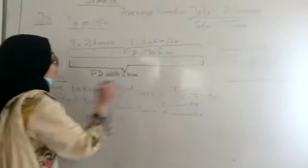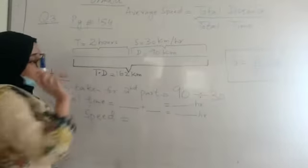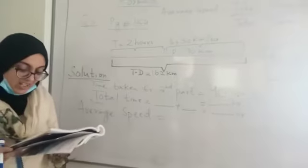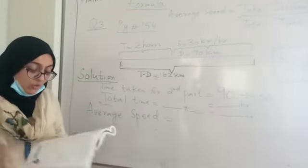As I have mentioned here, the total distance of the ship is 162 km. Find the average speed of the ship for the whole journey.